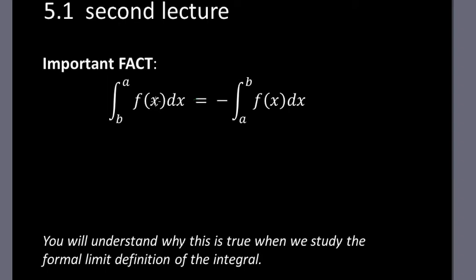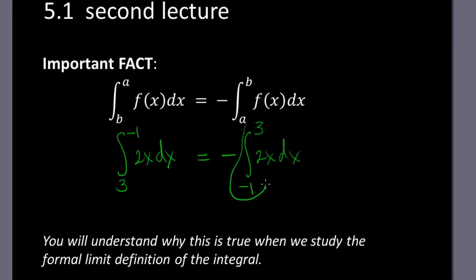For example, if we had the integral from 3 to minus 1 of 2x dx, we could say this is minus 1 times the integral from minus 1 to 3 of 2x dx. And this you would calculate just the way you did yesterday, and you would get 8, so our answer would be negative 8.